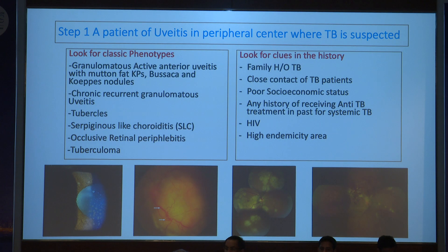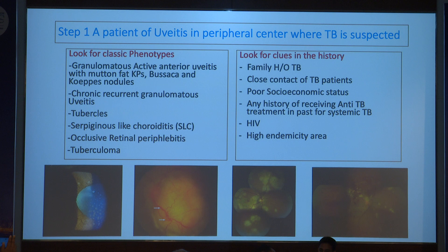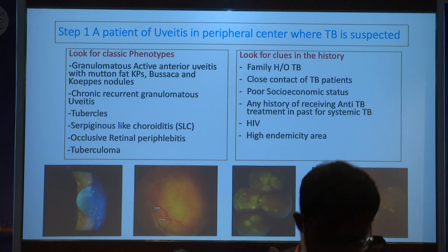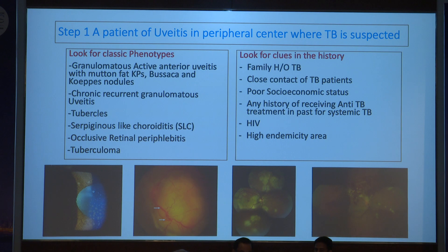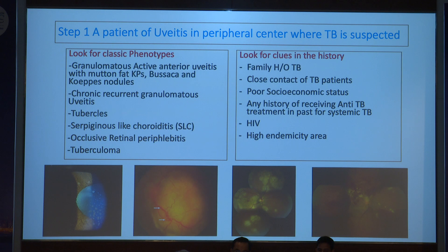The first step in ocular TB is always to look at the patient clinically and see what signs and features are present on the anterior and posterior segments. Always look for the classic phenotypes: granulomatous active anterior uveitis, acute anterior uveitis with mutton fat KPs and Busacca's and Koeppe's nodules, and classic chronic recurrent granulomatous uveitis. Tubercles are common in the posterior segment, as is serpiginous-like choroiditis, which is a very characteristic phenotype. Occlusive retinal periflebitis especially accompanied by perivascular choroiditis lesions is very specific for TB. Tuberculomas must be distinguished from sarcoidosis.